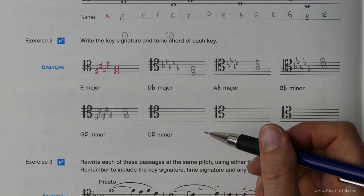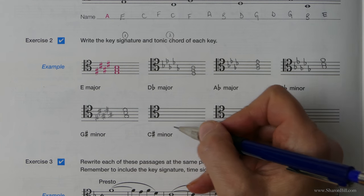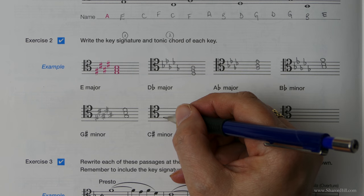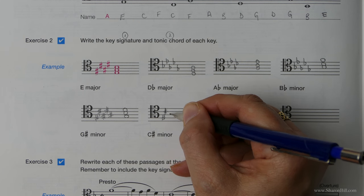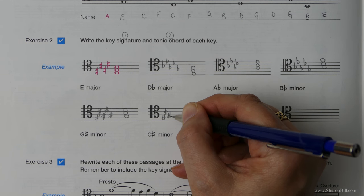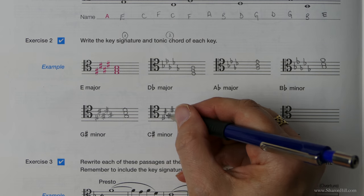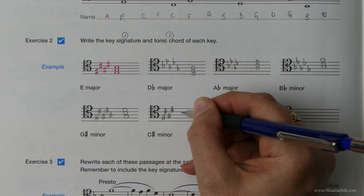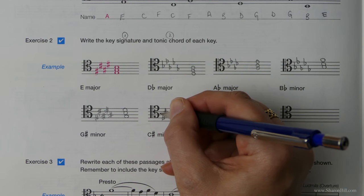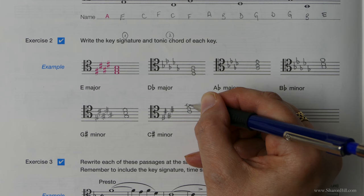C sharp minor is related to E major. So we only need four sharps now. So using that as a reference, we've got our F sharp, C sharp, G sharp, D sharp. That's right. And then, of course, C is our tenor clef here. So there's C, E, and then we'll just use a ledger line for the G.